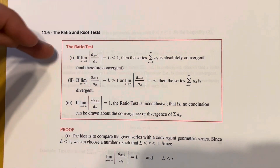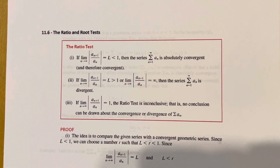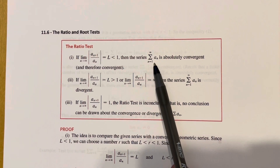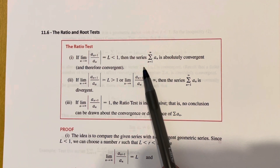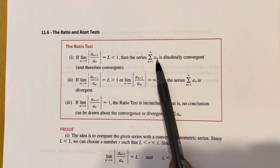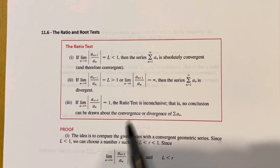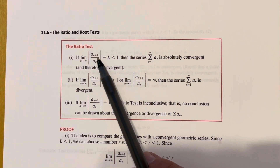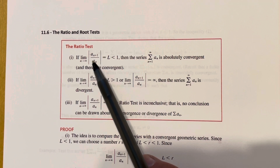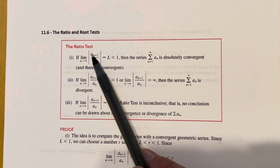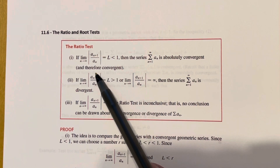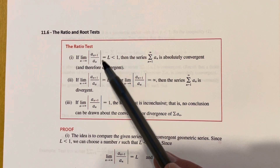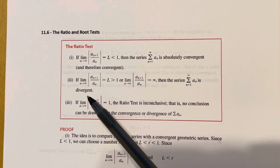You'll notice it's broken up into three sections. We're going to be talking about a series that has terms of the form a_n, and what we're going to do is look at consecutive terms: a_n and a_{n+1}. We form a ratio where we take the latter term divided by the previous term — a_{n+1} over a_n — take absolute values, and then take the limit as n goes to infinity. Depending on what that limit comes out to, we can say different things about the convergence of our series.